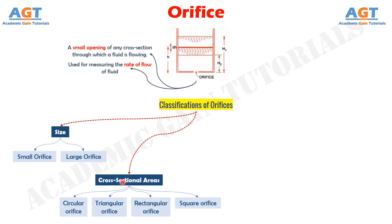Number 2: the orifices are classified as circular orifice, triangular orifice, rectangular orifice, and square orifice, depending upon their cross sectional areas.